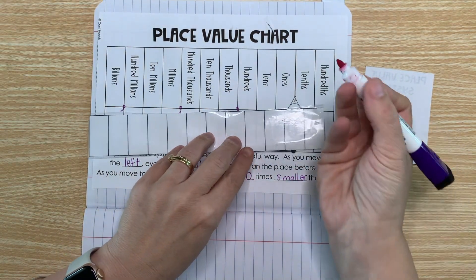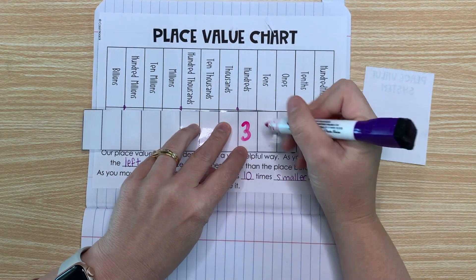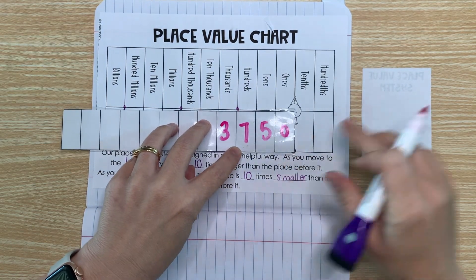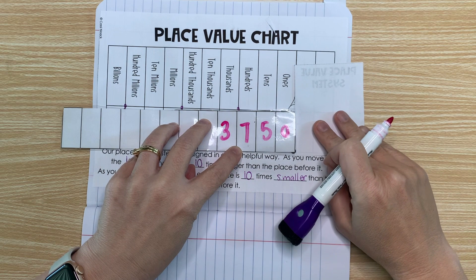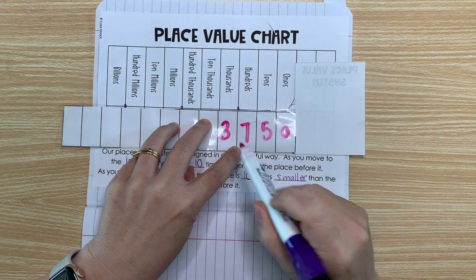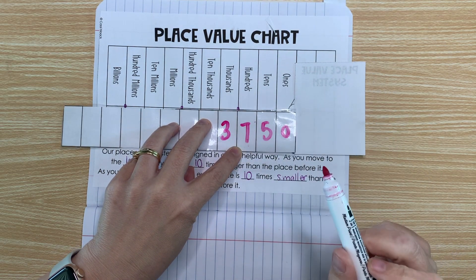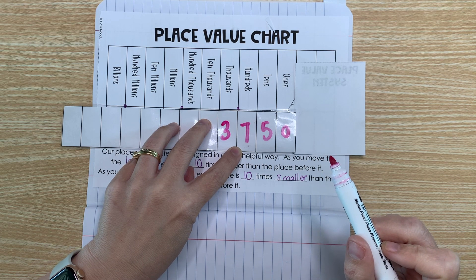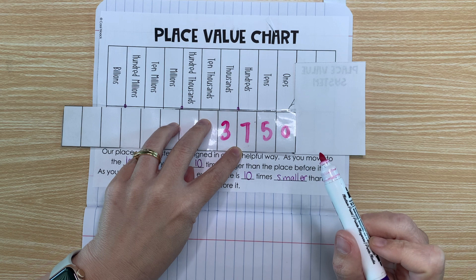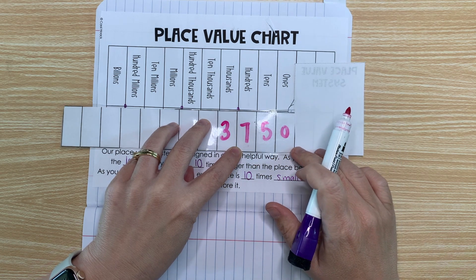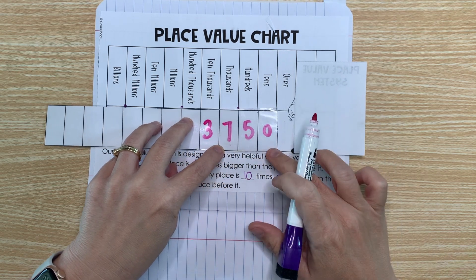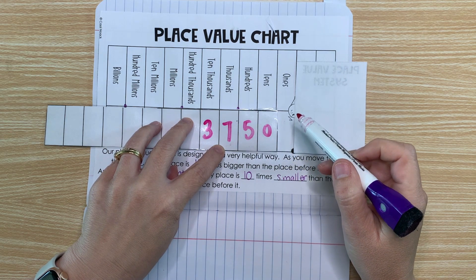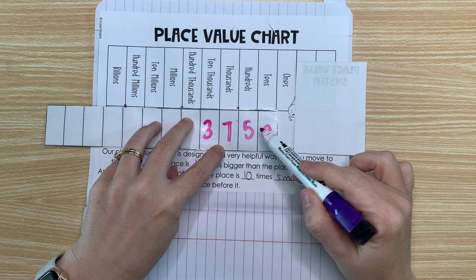So let's say we have the number 3,750. So I'm going to put it right here and I'm going to ignore the tenths and the hundredths for now. And we have the number 3,750. Well, if I say what's 3,750 times 10, I know all I have to do is move that number one place to the left. Add that placeholder zero and I'll see that our answer is 37,500.